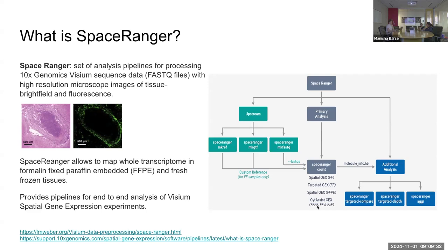CytAssist is run for FFPE and fresh frozen tissues. Apart from the Space Ranger count pipeline, there are additional analysis steps which take into account the molecule info H5 files — used for Space Ranger targeted compare, targeted depth, and the Space Ranger aggregate pipeline. But today's focus would be on Space Ranger count and the files generated from this particular pipeline.